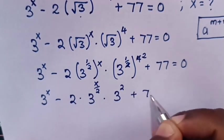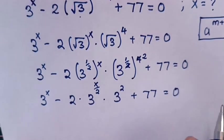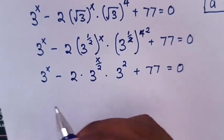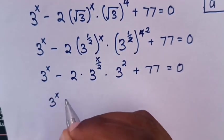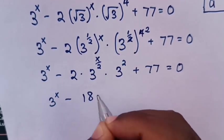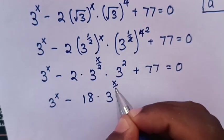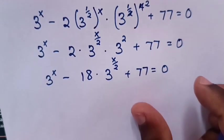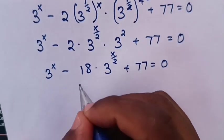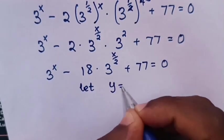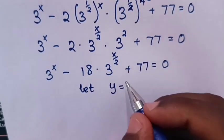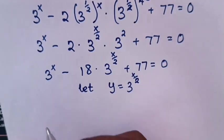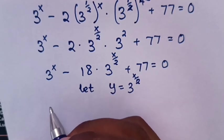Simplifying, 3^(1/2 · 4) = 3^2 = 9, so the equation becomes 3^x minus 18 times 3^(x/2) plus 77 equals 0. Next, we let y equal 3^(x/2), and substitute into our equation.